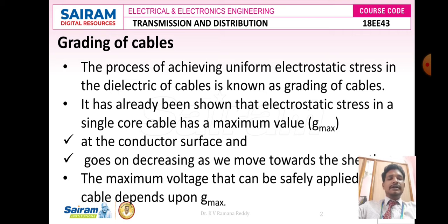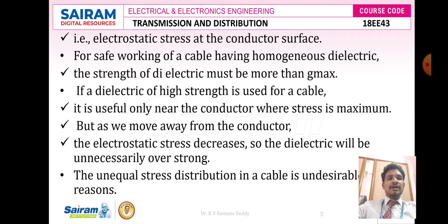The maximum voltage that can be safely applied to the underground cable depends upon Gmax, that is the electrostatic stress at the conductor surface. For safe working of a cable having homogeneous dielectric, the dielectric strength must be more than Gmax. If a high-strength dielectric is used, it is useful only near the conductor where stress is maximum. The impregnated paper near the conductor has high electrostatic stress compared to the metallic or lead sheath further out.